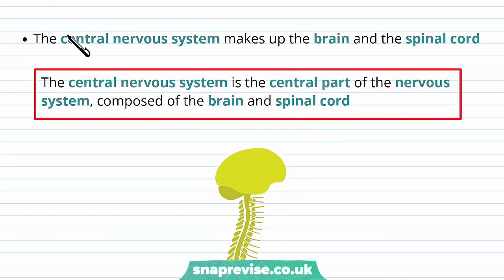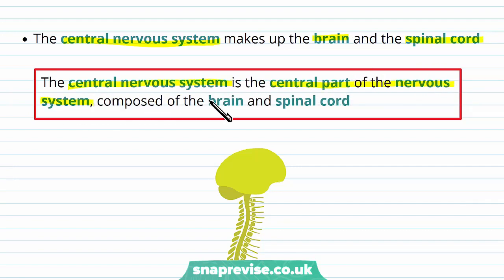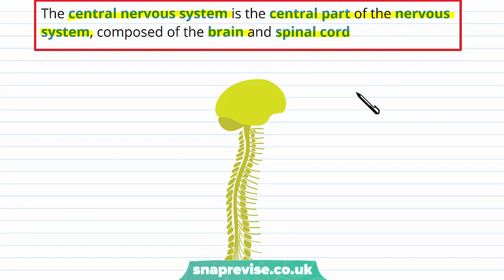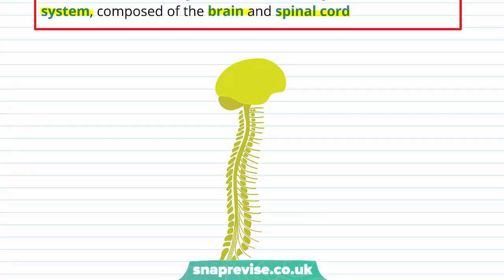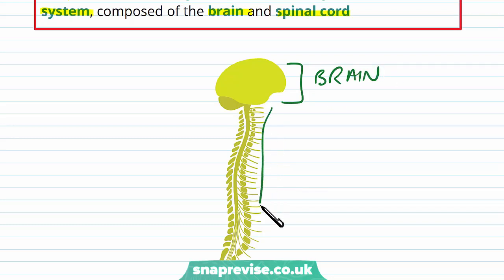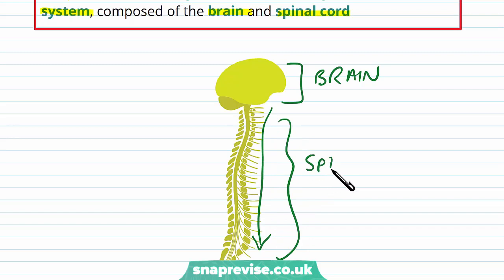The central nervous system itself is composed of the brain and the spinal cord. So the central nervous system is the central part of the nervous system, composed only of the brain and the spinal cord. We've got the brain inside our head, which is protected in the skull, and then connected to this, running down our spine in the back, is the whole spinal cord. Together these two make up the CNS.